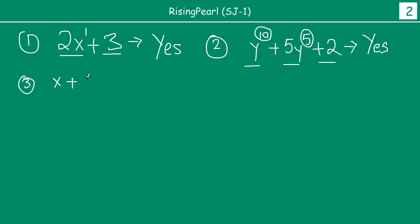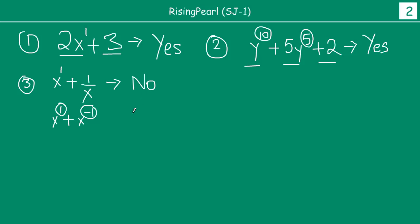How about x plus 1 by x. Is this a polynomial? Aap yaha pe dekho, the first term x is raised to power 1, so this term is good. But the second term 1 by x — yaha pe aap notice karoge, 1 by x can be written as x to the power minus 1, as we saw in our laws of exponents presentation. So this expression becomes x to the power 1 plus x to the power minus 1. The first term is good because it is raised to power 1 which is a whole number. But if you notice the second term, you will realize that minus 1 is not a whole number. So this is not a polynomial. This is a no.